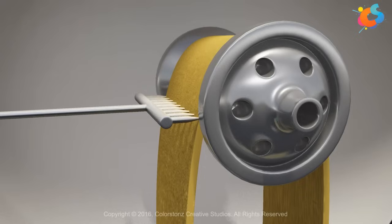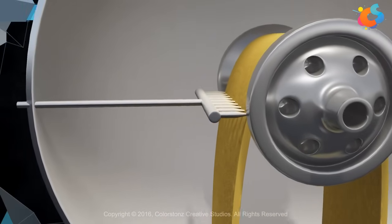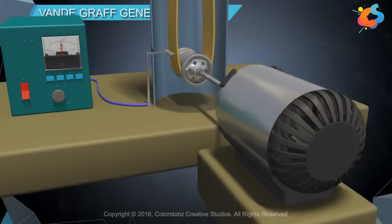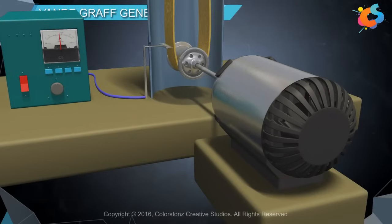Another comb called receiver comb is positioned near the upper roller and is connected to a hollow metal sphere. A motor is connected to the bottom roller in order to move the belt.